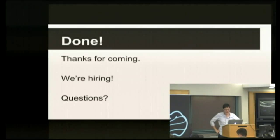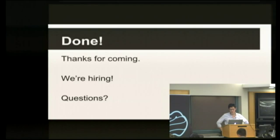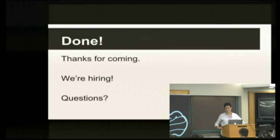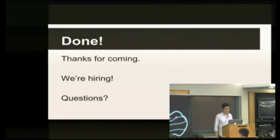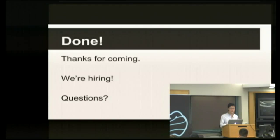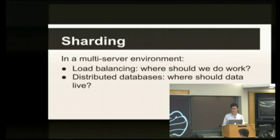One issue with memcache is that it tries to keep all the key-value pairs in memory, so if you run out of memory, that's a problem. Also, while it's very high performance, the server can only respond to some number of requests per second. One way you solve this is you just run several memcache servers. But then you've got this problem: I've got some key and I want to put it on one of these servers — which server should I put it on? This is the sharding problem.